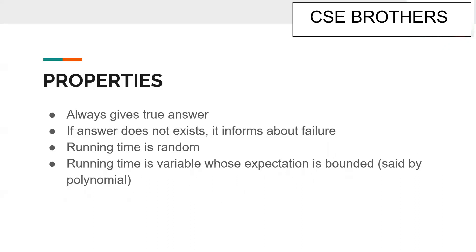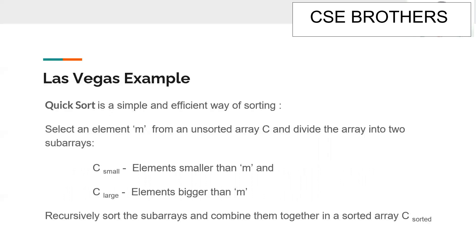The Las Vegas algorithm always returns the correct answer, and if a correct answer does not exist it informs us of the failure — which is not done in the Monte Carlo algorithm. Since it is a randomized algorithm, the running time is random; it is a variable whose expectation is bounded by a polynomial.